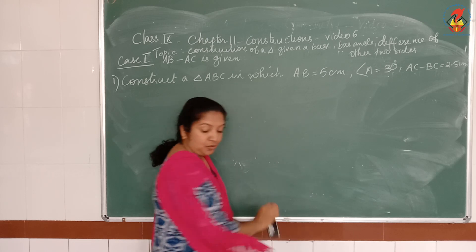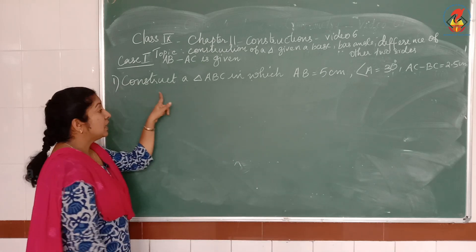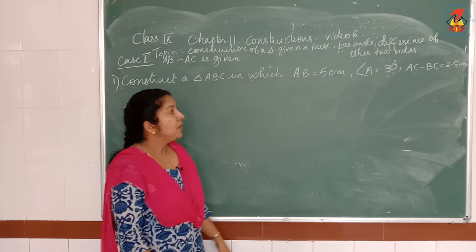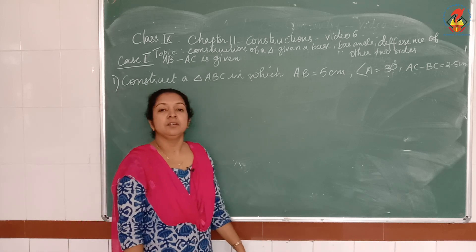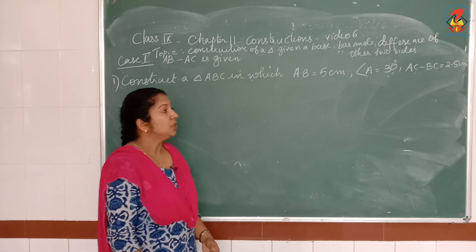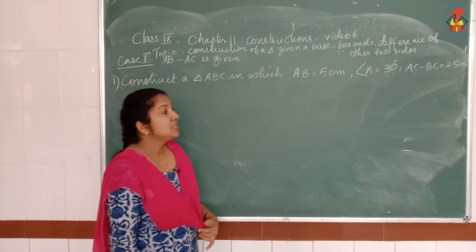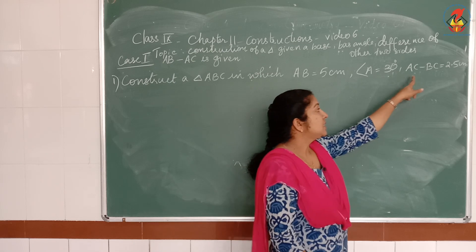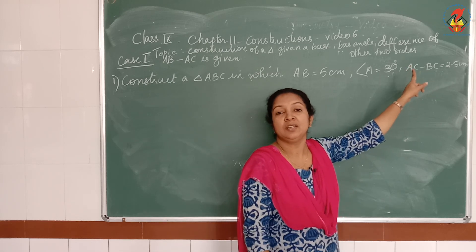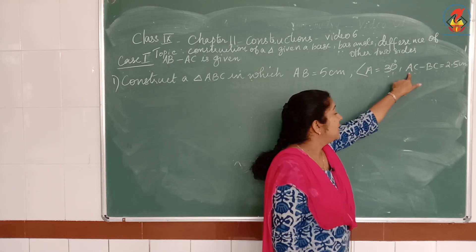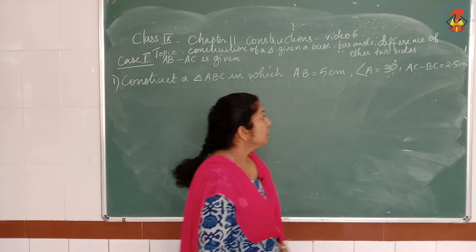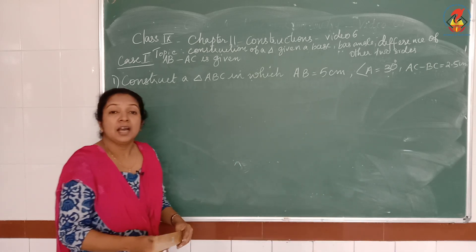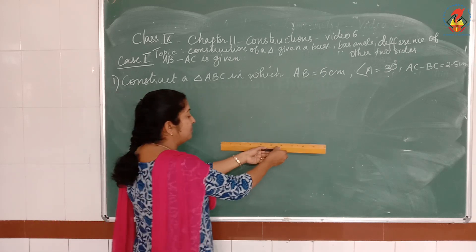The first question: construct a triangle ABC in which AB is equal to 5 cm, angle A is equal to 30 degrees, and AC minus BC is equal to 2.5 cm. Here C is common, so we need the combination of AC then BC. First, we have to draw a line segment AB of 5 cm.